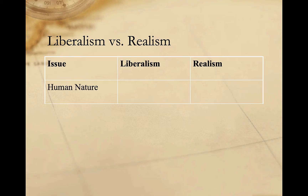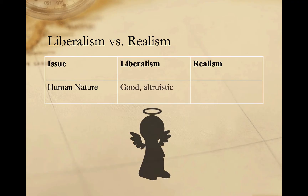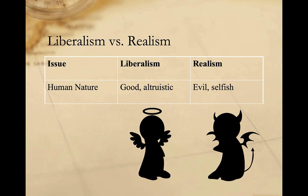Let's start with the question of human nature. Here, liberals assert that human beings are fundamentally good and altruistic, or at least malleable, while realists contend that human beings are fundamentally self-interested and perhaps even evil.